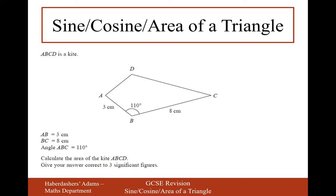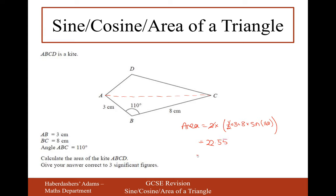For this quadrilateral, splitting it in half gives two symmetric triangles. The area equals 2 times half times 3 times 8 times sine 110. The 2 and the half cancel, leaving 3 times 8 times sine 110, giving 22.6 centimetres squared to three significant figures.